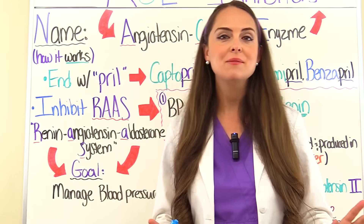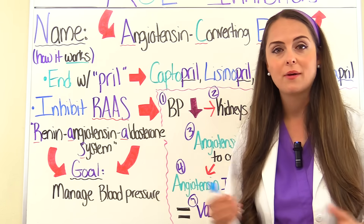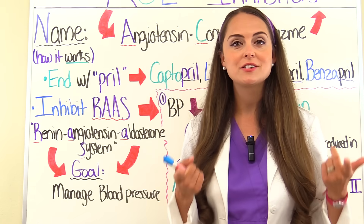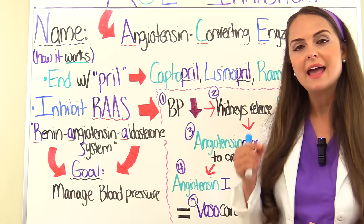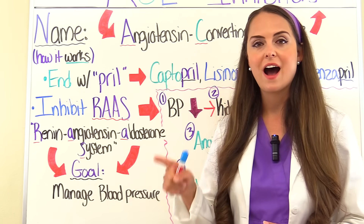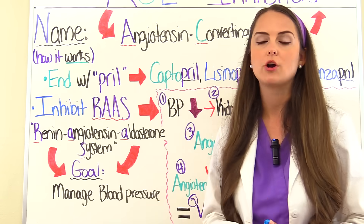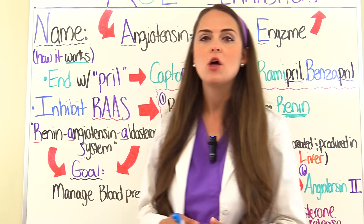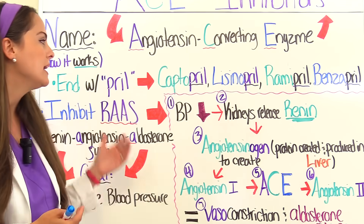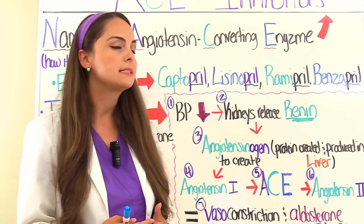If we introduce an ACE inhibitor, it causes the opposite effect — it lowers the blood pressure. One thing to remember while studying: ACE inhibitors end with 'pril,' P-R-I-L. So when looking at a patient's medication list or taking an exam, look for 'pril.' Examples include Captopril, Lisinopril, Ramipril, and Benazepril.